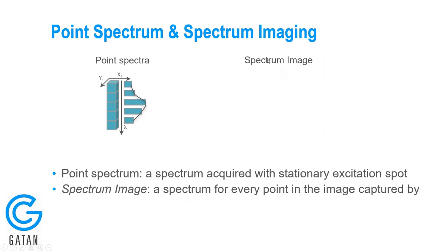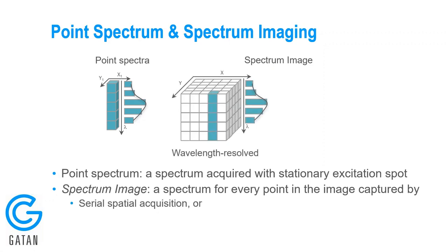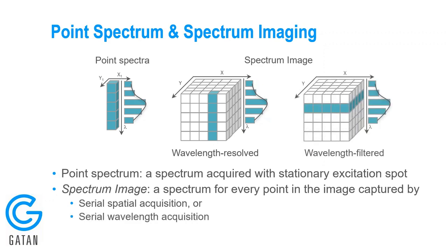This gives us the capacity to collect point spectra where we point the beam at a single point and see intensity as a function of wavelength for that position. It's also possible to raster the beam and acquire a spectrum for every point in the image — we call those spectrum images. There are two methods: wavelength-resolved, where we acquire a full spectrum for each position serially through space; and wavelength-filtered, where we use the spectrometer as a monochromator and feed images of a single wavelength to a point detector like a PMT, processing serially through wavelengths.